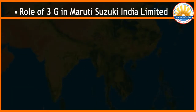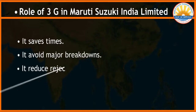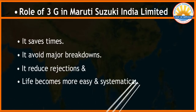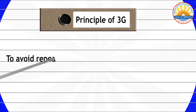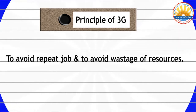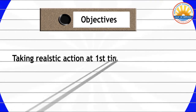Role of 3G in Maruti Suzuki India Limited: it saves time, it avoids major breakdowns, it reduces rejection, and life becomes more easy and systematic. The principle of 3G is to avoid repeat jobs and to avoid wastage of resources. The objective of 3G is taking realistic action at the first time.